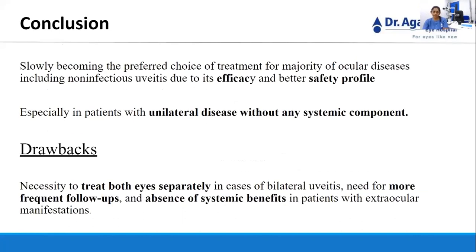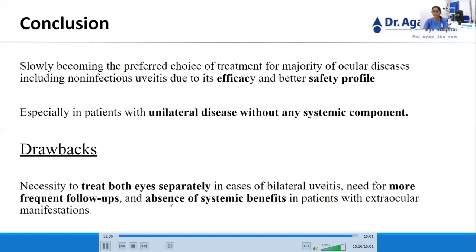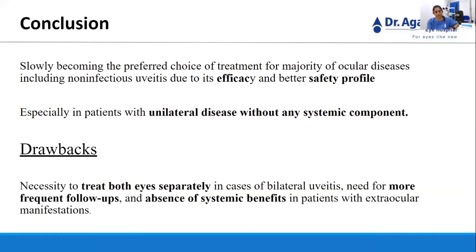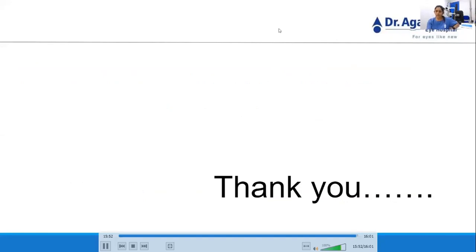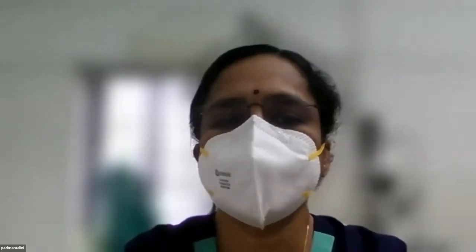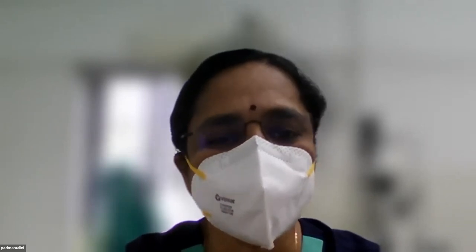The advantages of intravitreal clindamycin for toxoplasmic retinochoroiditis include overcoming systemic side effects of oral drugs like azithromycin which causes GI disturbances, pyrimethamine which causes nausea and vomiting, and azithromycin which can lead to leukopenia and thrombocytopenia. Intravitreal therapy is becoming the preferred choice for the majority of ocular diseases, especially non-infectious uveitis, due to its efficacy and better safety profile, particularly in patients with unilateral disease and without any systemic component. The drawback is the necessity to treat both eyes separately in bilateral uveitis and the need for more frequent follow-ups and absence of systemic benefits. Thank you to KAVOS for this opportunity.